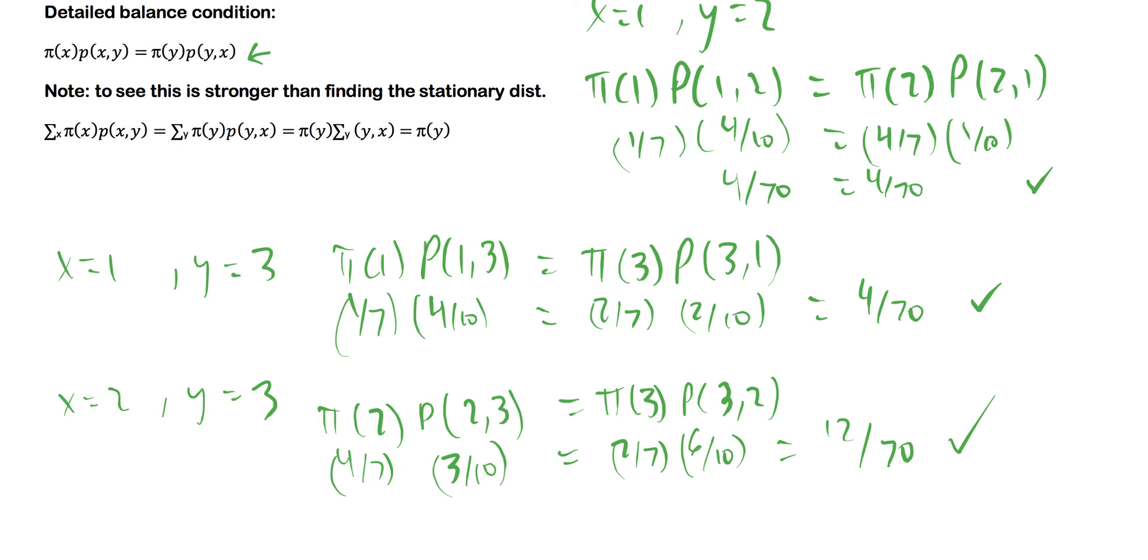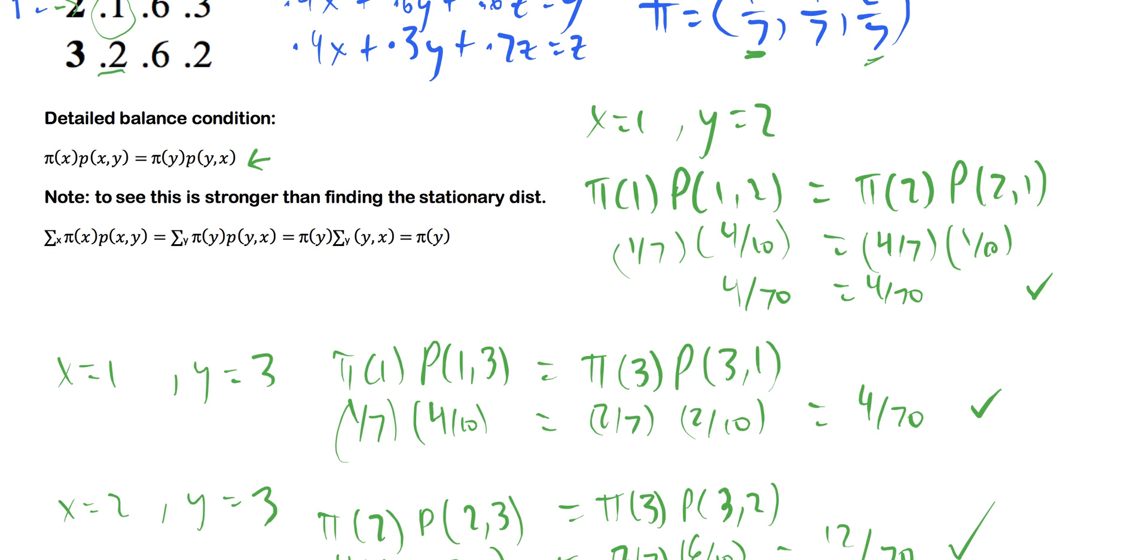And now, concluding here, since we've checked these states, that we go from one state to the other, back to the other state is an equal probability, then this does satisfy the detailed balance condition. And we're finished.